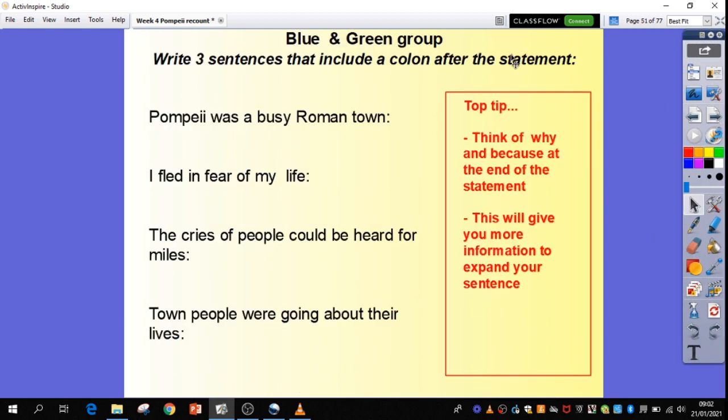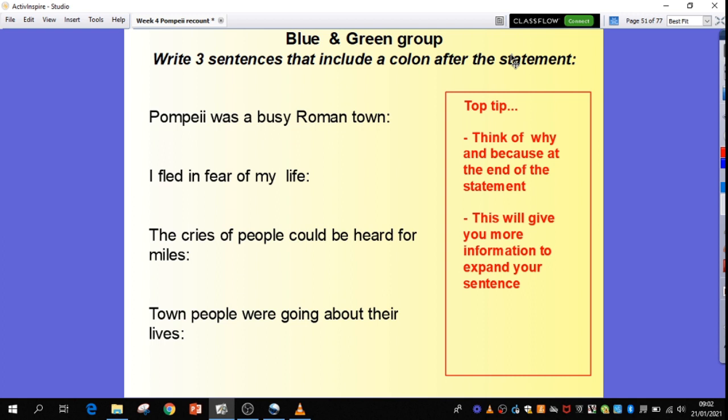So, Blue group, what I've done for you to help you out, because I'm feeling nice today, is that I've done the start of your sentences, your main thought, your main idea. So, write three sentences that include a colon after the statement. So, I've done here, Pompeii was a busy Roman town. Why was it a busy Roman town? Expand on that idea.